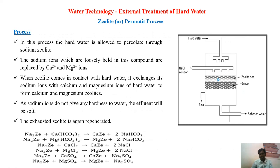The process uses a zeolite bed made up of sodium aluminosilicates — represented simply as Na₂Z. Hard water is allowed to pass through this zeolite bed. As it passes, the sodium ions on the surface of the zeolite are exchanged with the calcium or magnesium ions present in the hard water. All spots in the zeolite bed gradually become occupied by calcium and magnesium ions, replacing all the sodium ions.